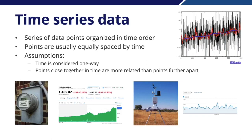The key assumptions behind time series data are: first, time is considered one-way — we don't go back in time, it only moves forward in one direction. Second, we assume that points closer together in time are generally more relevant or more related to each other than points which are further away in time.